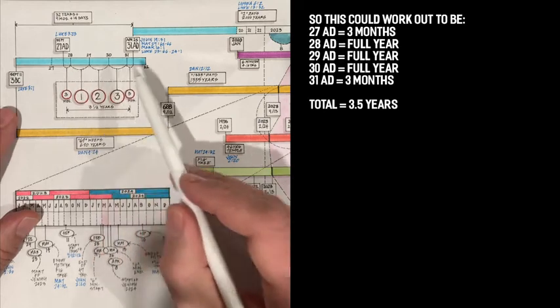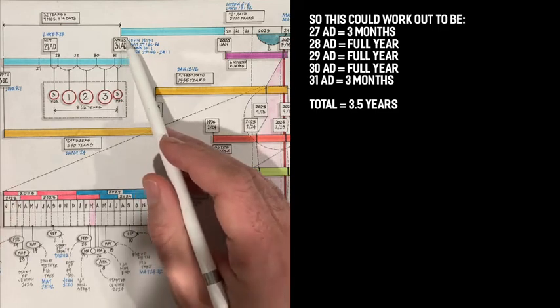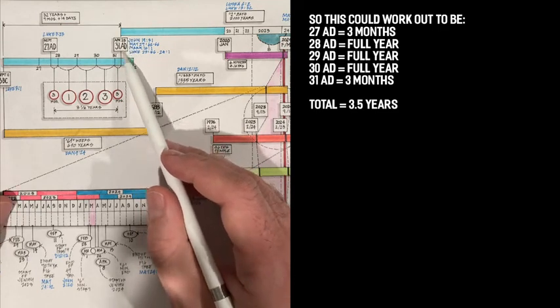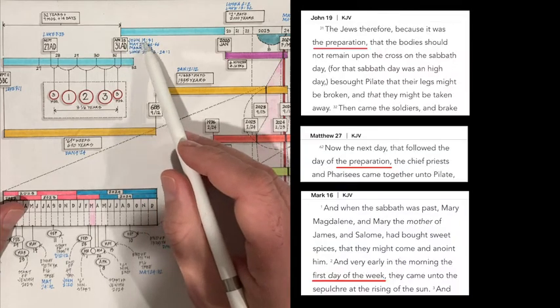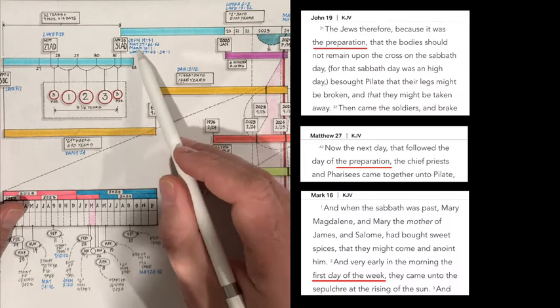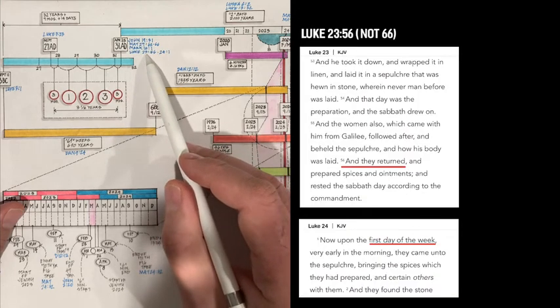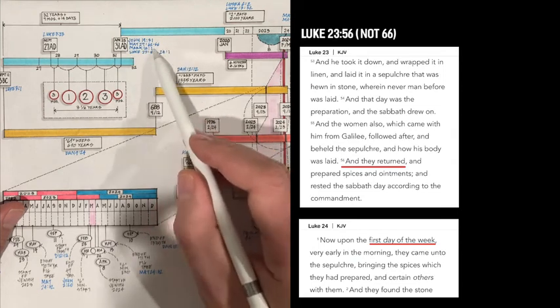And that's in Luke 3:23. If that's the case, we have three months into 27, starting then 28 AD, full 28, full 29, full 30. And then we have three months or so in 31 AD, April 25, being the crucifixion or the resurrection rather, as stated in John 19:31, Matthew 27:62, 66, Mark 16:1, Luke 23:66, and 24:1.